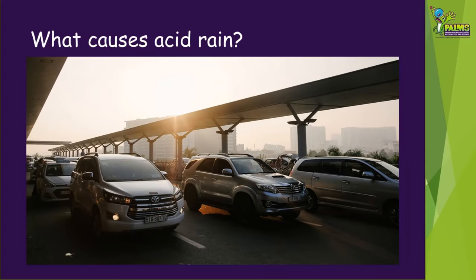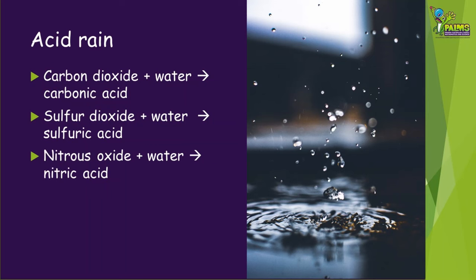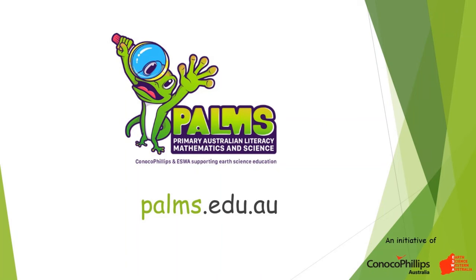What causes acid rain? When we burn fossil fuels, they release gases like carbon dioxide that reacts with water to form carbonic acid, sulfur dioxide that forms sulfuric acid, and nitrous oxide that forms nitric acid. All of these acids can cause limestone and marble to dissolve.